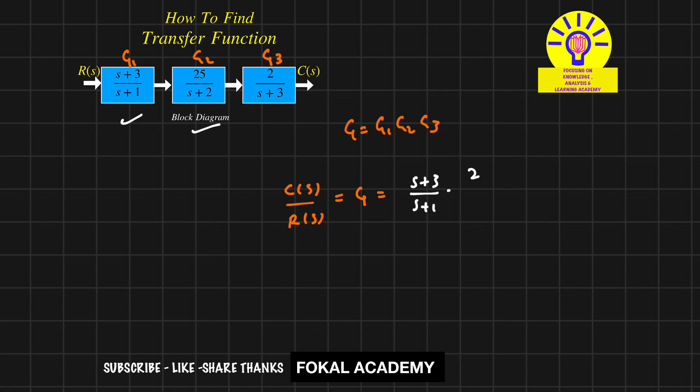1 times 25 divided by s plus 2 times 2 by s plus 3. So here s plus 3 and s plus 3 cancel, it becomes 50 divided by s plus 1 times s plus 2, and this is the required transfer function for the given problem.